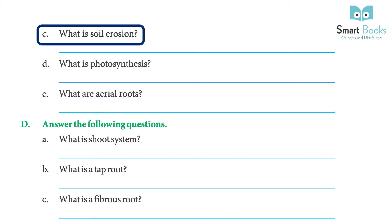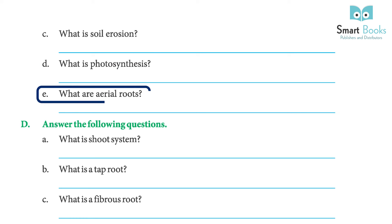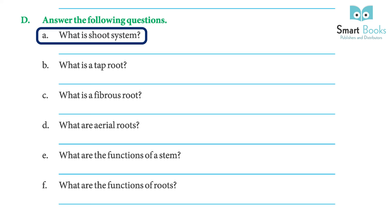C: What is soil erosion? Answer: heavy rain and strong winds wash or blow the top soil away — this is called soil erosion. D: What is photosynthesis? Answer: plants make food in the presence of sunlight, water, air, and chlorophyll — this is called photosynthesis. E: What are aerial roots? Answer: big trees like banyan have numerous roots that grow downward from the branches — they are called aerial roots.